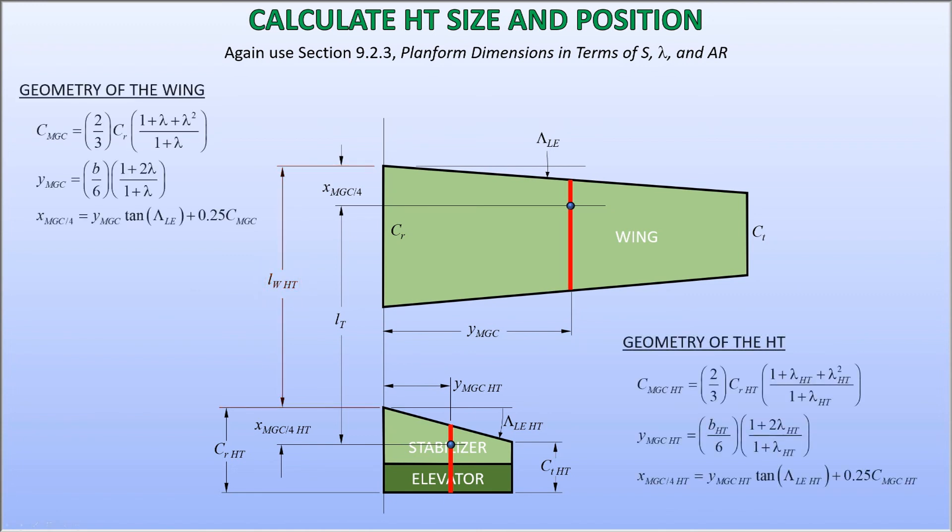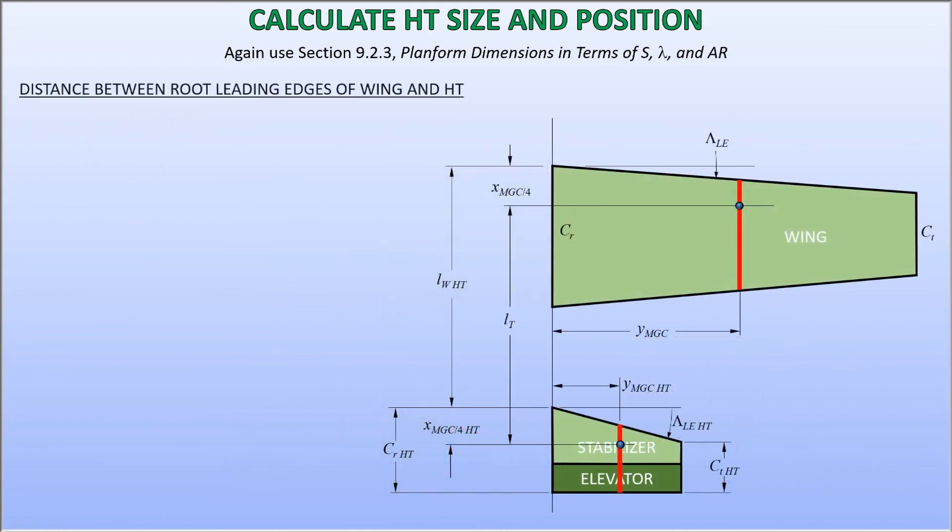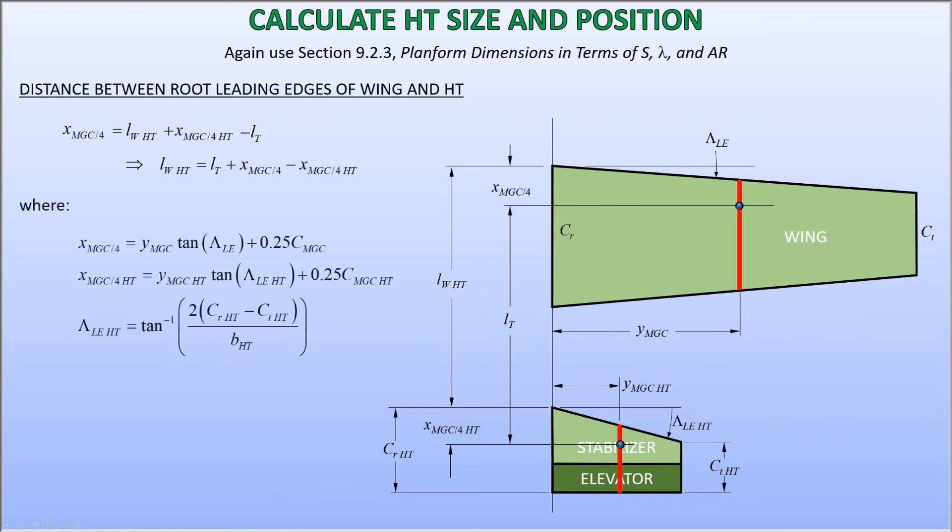This is done using the formula shown. Then note that the distance from the wing apex to the quarter chord of its mean geometric chord can be calculated as L sub W-H-T plus the distance from the apex of the horizontal tail to the quarter chord of its mean geometric chord minus the tail arm, L sub T. This allows us to solve for L sub W-H-T as shown. The interested viewer can pause to take a closer look at the math.